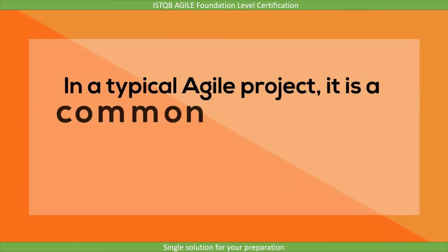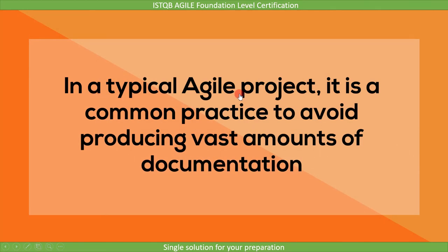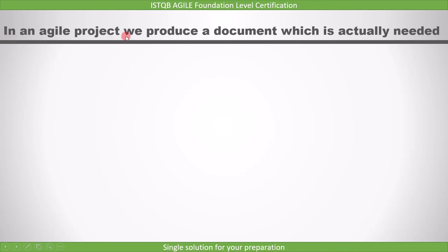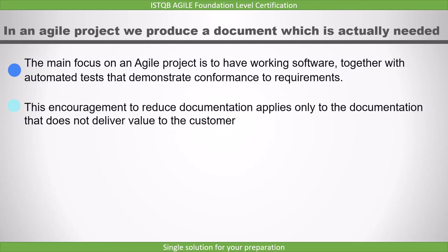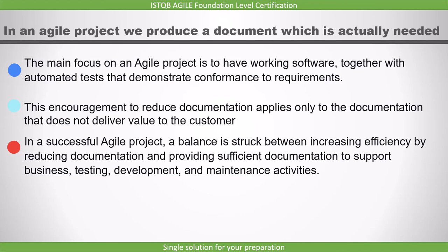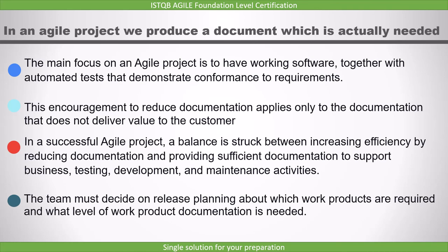Regarding documentation, the most important point is that in a typical agile project, it is common practice to avoid producing vast amounts of documentation. In an agile project, we produce only the documentation that is actually needed. The main focus is to have working software, together with automated tests that demonstrate conformance to requirements. This encouragement to reduce documentation applies only to documentation that does not deliver value to the customer. In a successful agile project, a balance is struck between increasing efficiency by reducing documentation and providing sufficient documentation to support business, testing, development, and maintenance activities. The team must decide during release planning which work products are required and what level of documentation is needed.